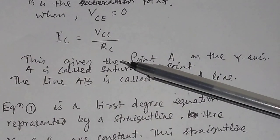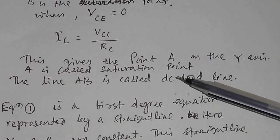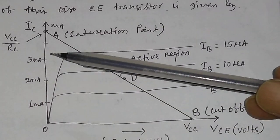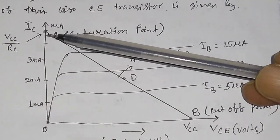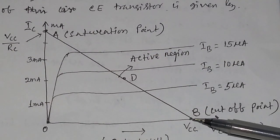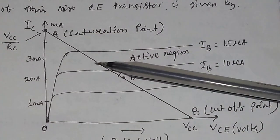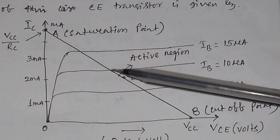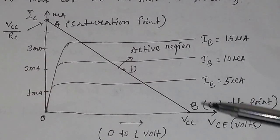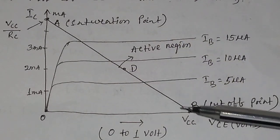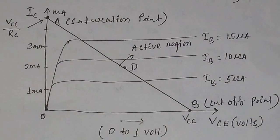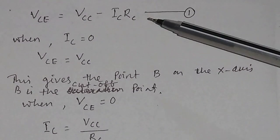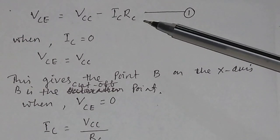The value IC = VCC/RC is called the saturation point. When VCE equals zero, IC equals VCC divided by RC, and this point is called the saturation point. So you have got two points: one is your cutoff point and another is your saturation point. If you join these two points — the cutoff point and the saturation point — by means of a straight line, then that straight line is called the DC load line. The straight line AB is called the DC load line. Looking at equation one, it is in the form of a first degree equation Y = MX + C, represented by a straight line.